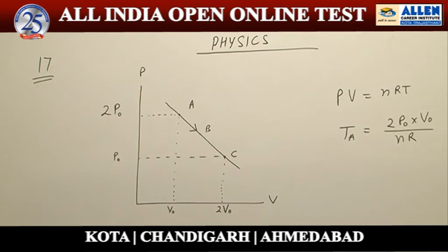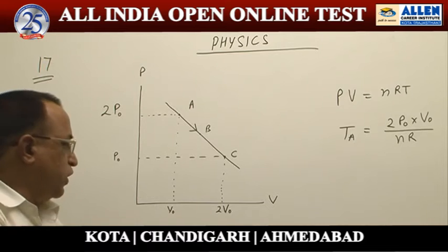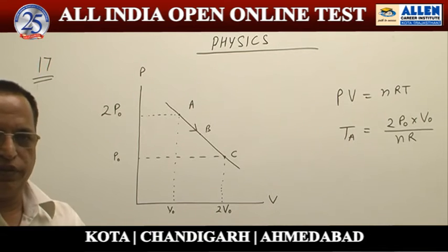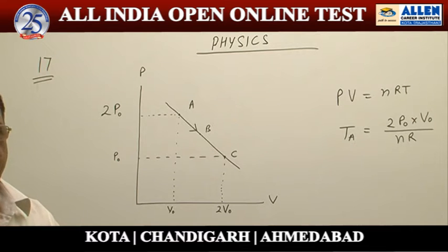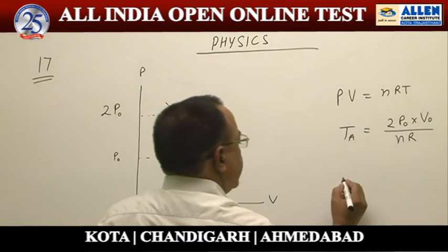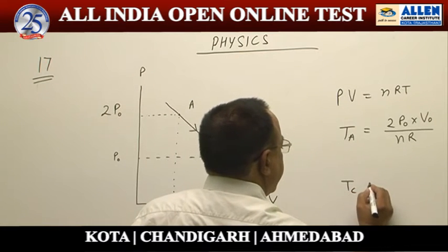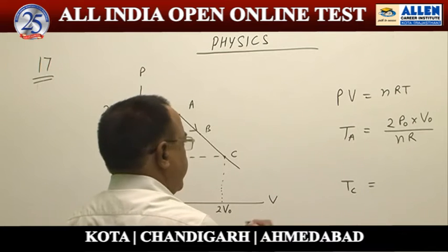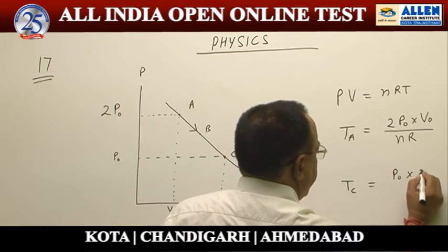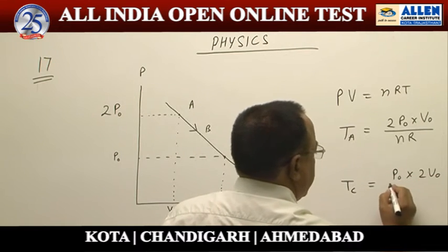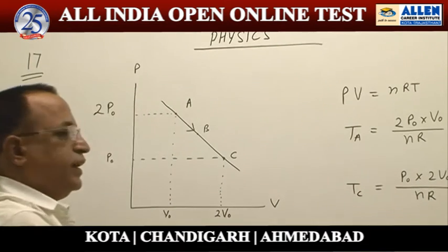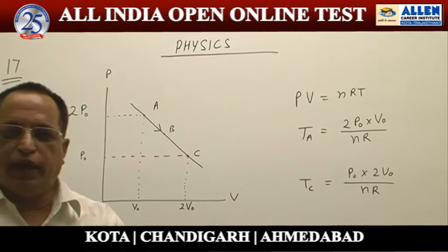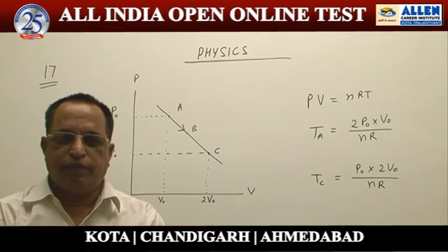At point C, the pressure has become P₀ and volume has become 2V₀. Calculating the temperature at point C, we get T_C = P₀ × 2V₀ / nR, which equals 2P₀V₀ / nR. We can see that the temperature at point A and at point C is the same.